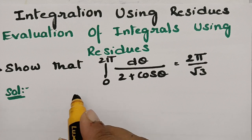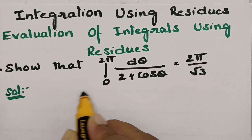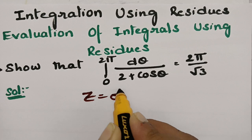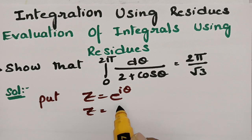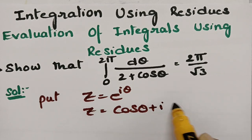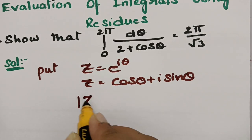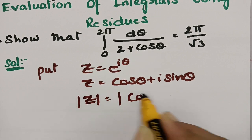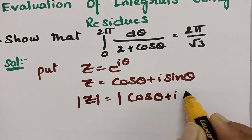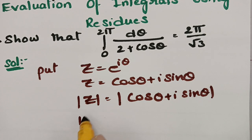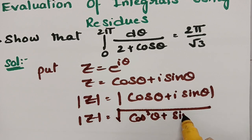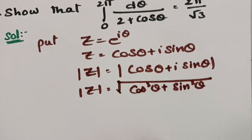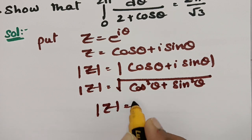In each video we take z equal to e to the power iθ. So we put z = e^(iθ), and as you know e^(iθ) = cos θ + i sin θ. Taking modulus on both sides, |z| = √(cos²θ + sin²θ), therefore |z| = 1.